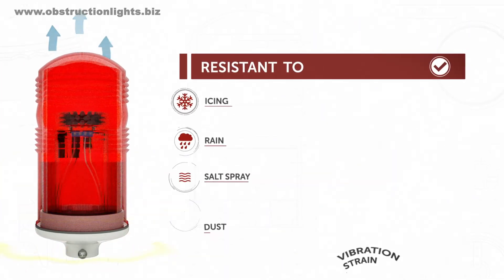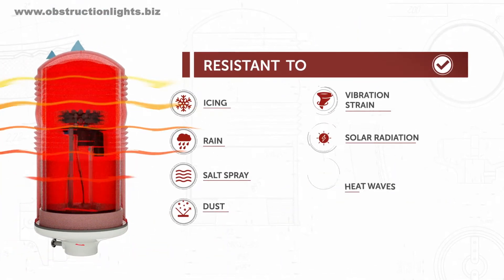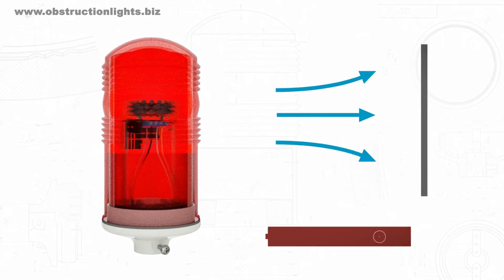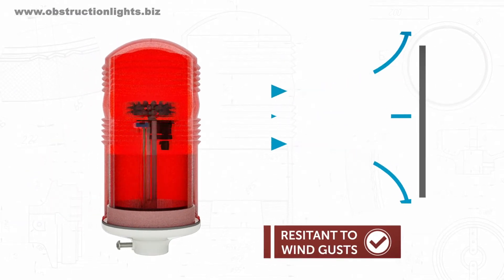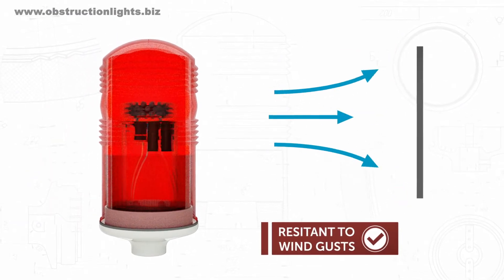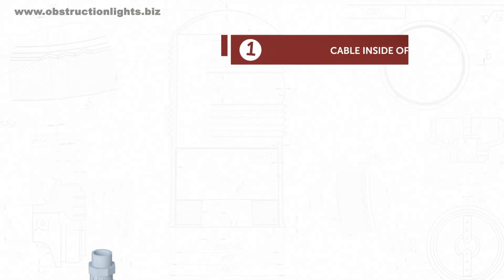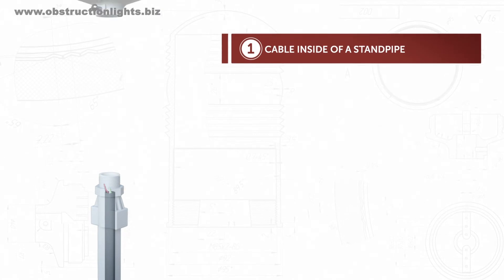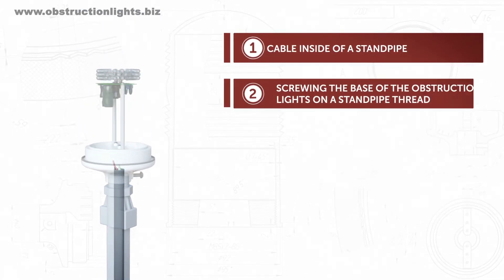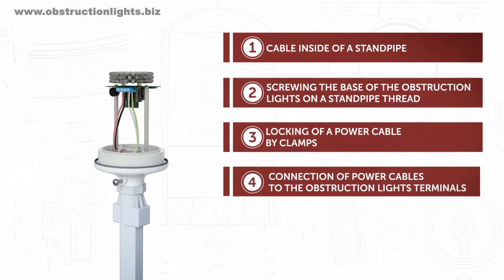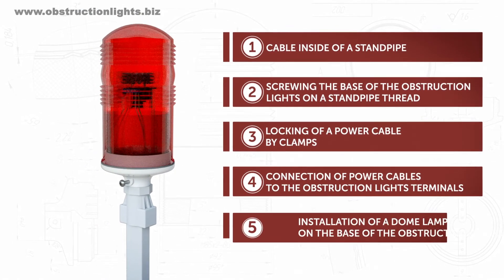The produced heat enables natural device defrosting. ZOM48 LED's small surface area provides low windage. The lights are installed on a standpipe or some other fixing component which has a mounting G ¾-inch screw seat.